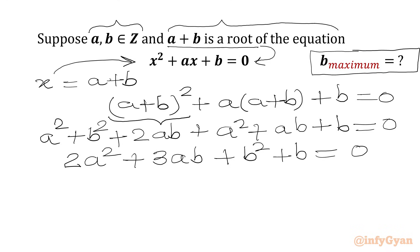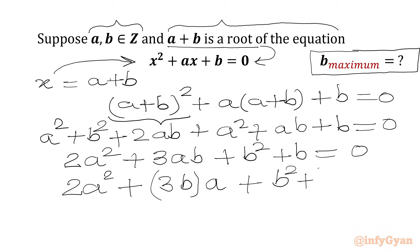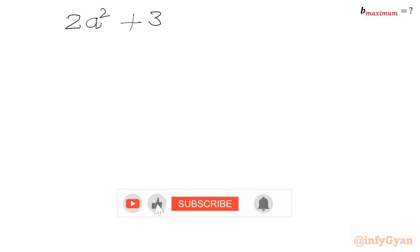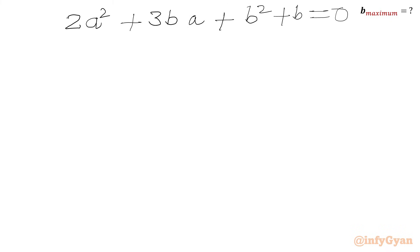Now a² + a² is 2a², and 2ab + ab is 3ab. Then we have b² + b left. So we get 2a² + 3ba + b² + b = 0. This is one quadratic equation in the variable a, and we can compare it with the standard equation ax² + bx + c to apply the quadratic formula.